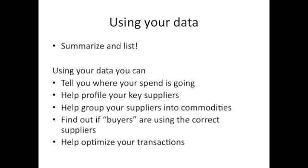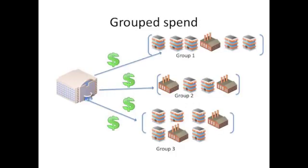If you remember our graphic from earlier in the presentation with our fragmented supply base — once we've analyzed our spend and put our suppliers into commodity groups, we should see where we're spending our money. We might find that we have lots and lots of suppliers within a given commodity category and we're not using our spend as well as we could — we're not getting the best discounts or the best deals.